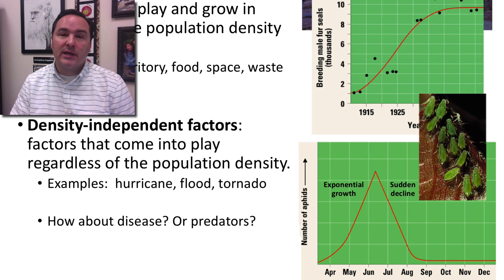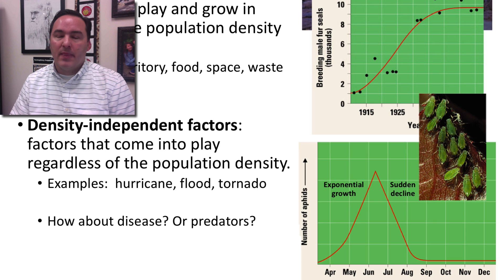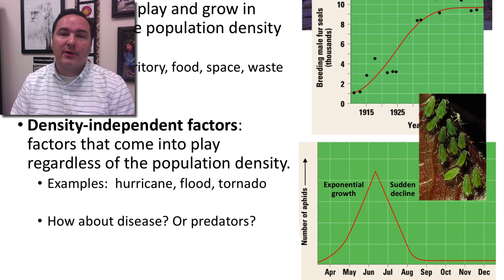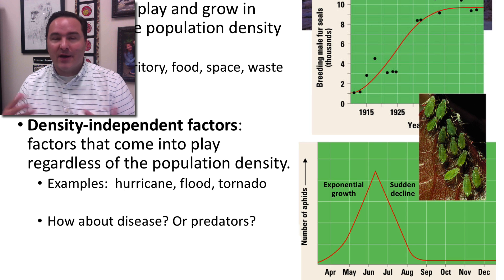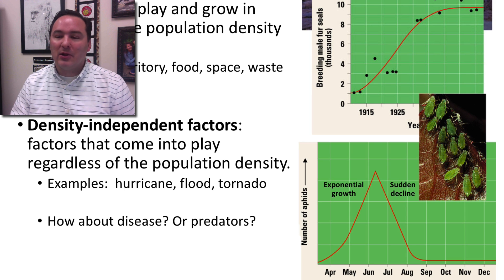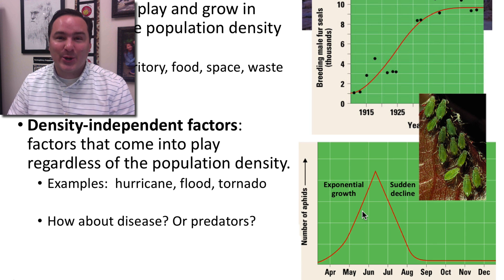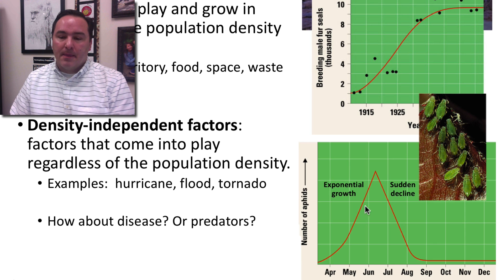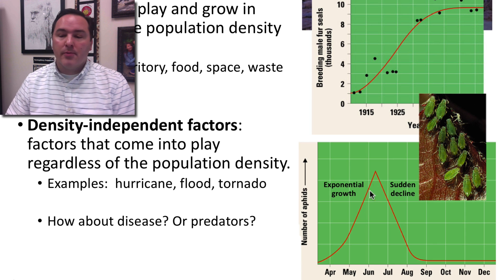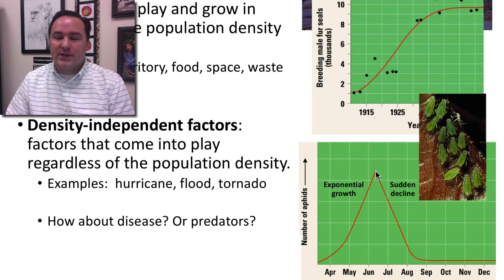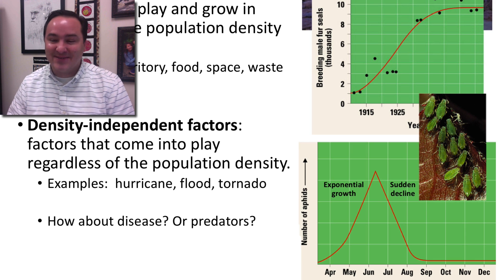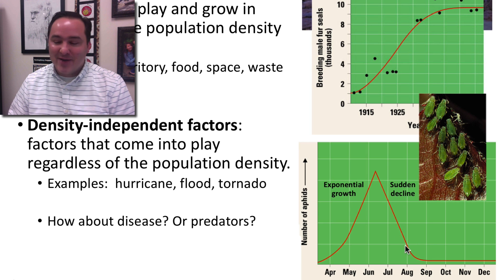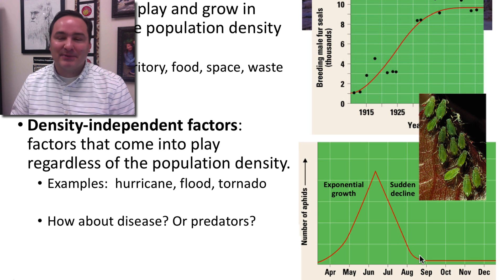Aphids can reproduce both asexually and sexually. But when they are in their population boom cycle, it's typically cloning that's happening — females are just cloning and cloning and you get this huge increase in aphids. You've probably seen this on some of the plants in your garden. But then maybe all of a sudden you have a really cold morning and it kills off a ton of the aphids, so you have a huge decline in the population.